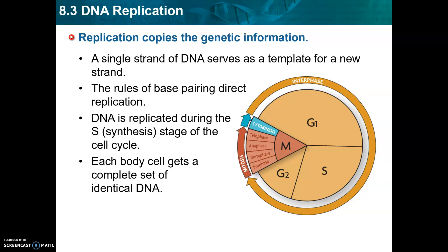What you have to the bottom right of this slide is the cell cycle. The cell cycle represents all of the stages that a cell must go through during its life. A cell is either going to be preparing to grow, or it's going to be synthesizing — that's what we're going to be going over today, DNA replication — or it's going to be going through mitosis.